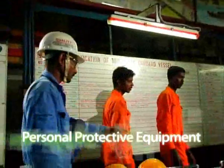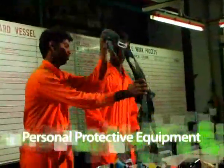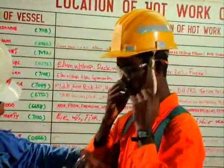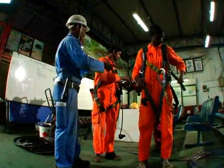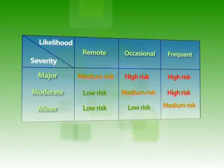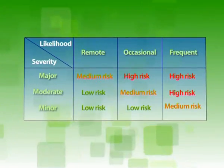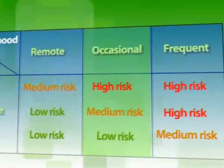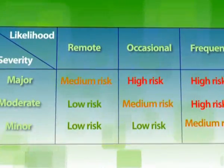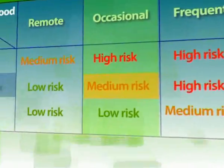Finally, the use of personal protective equipment as a control measure. This involves selecting and using appropriate safety boots, helmet, and breathing apparatus. Rescue equipment must be on standby for emergencies. With risk control measures implemented, the likelihood of the accident occurring is lowered from frequent to occasional or remote, reducing the risk from high to medium or even low risk.